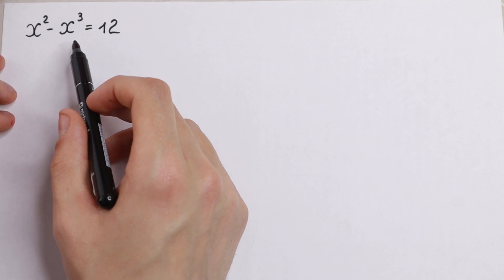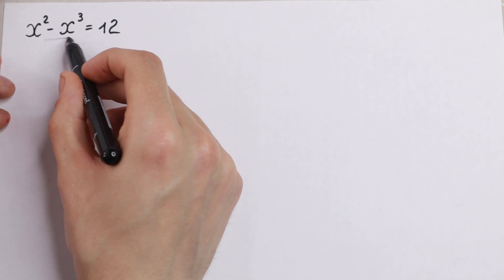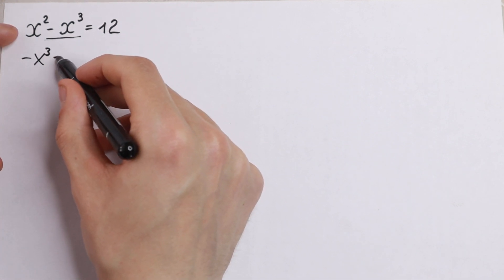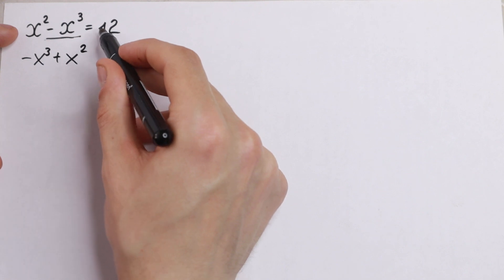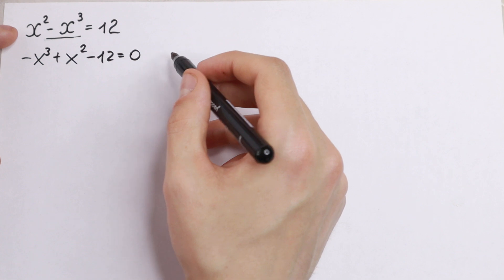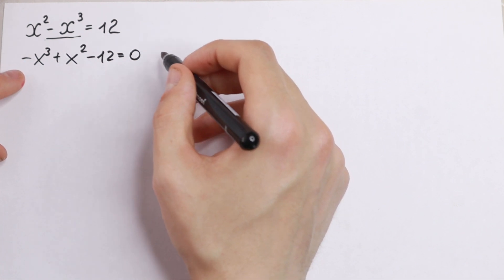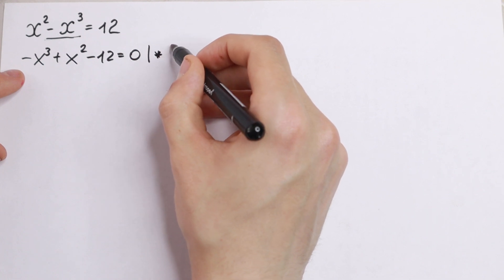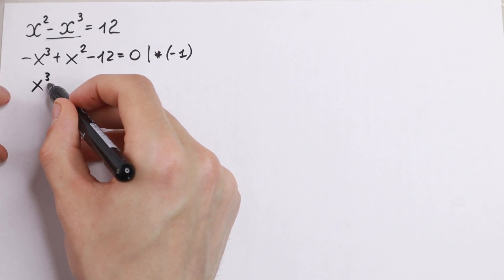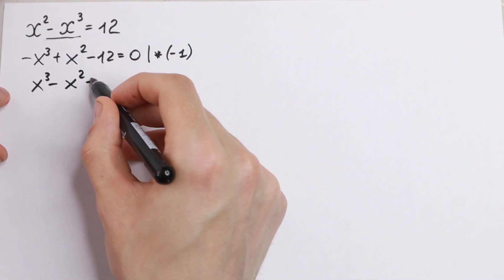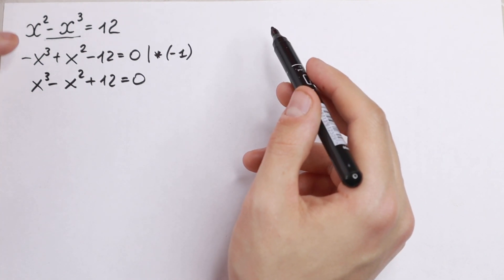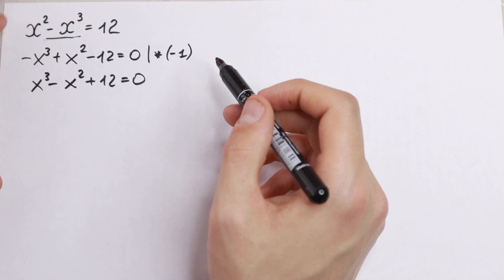First of all, let's change the order a little bit. We'll write minus x cubed first on the left, then plus x squared, and bring the 12 to the left as minus 12, equal to 0. Since the leading minus is unnecessary, we multiply by minus 1, giving us x cubed minus x squared plus 12 equal to 0. This is the same equation, just written in a different order.